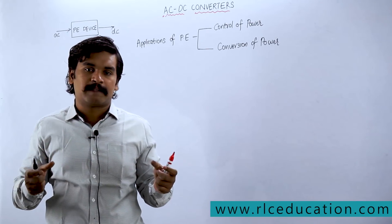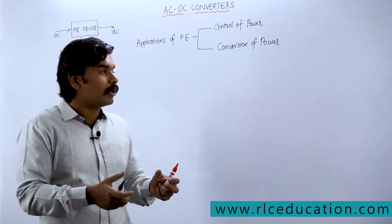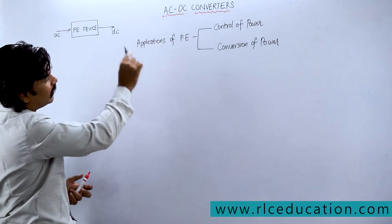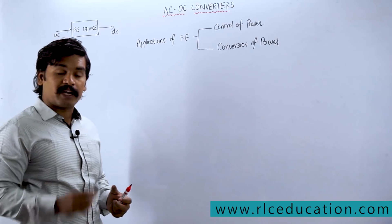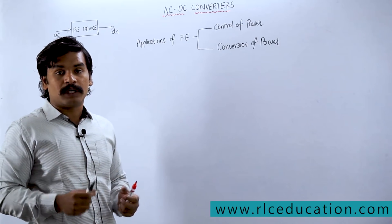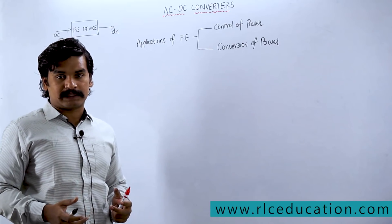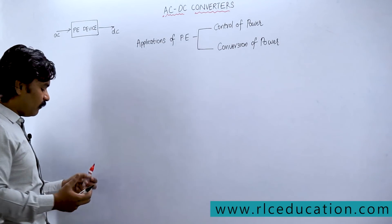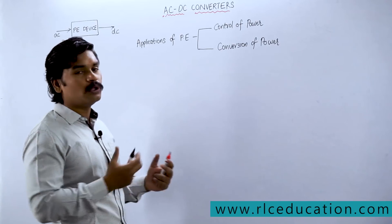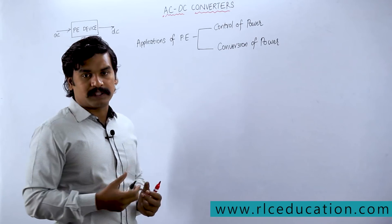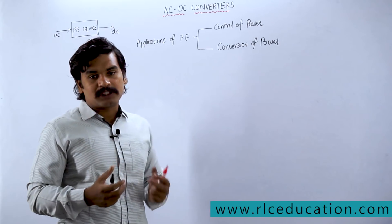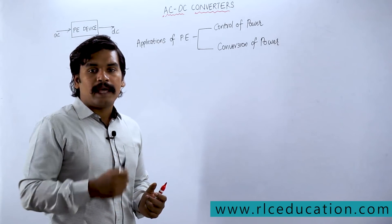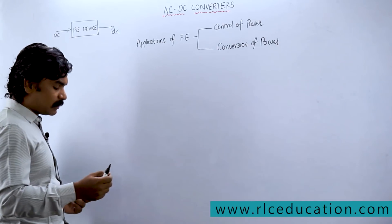From my experience, there are roughly around 200-plus formulas in AC-DC converters alone. For each and every parameter there is a formula. That is why it becomes very difficult for students to understand AC-DC converters and they don't give much interest in power electronics. But this is the topic which is very much sought after by PSUs and any other exam conducting authority — it is a very interesting subject.